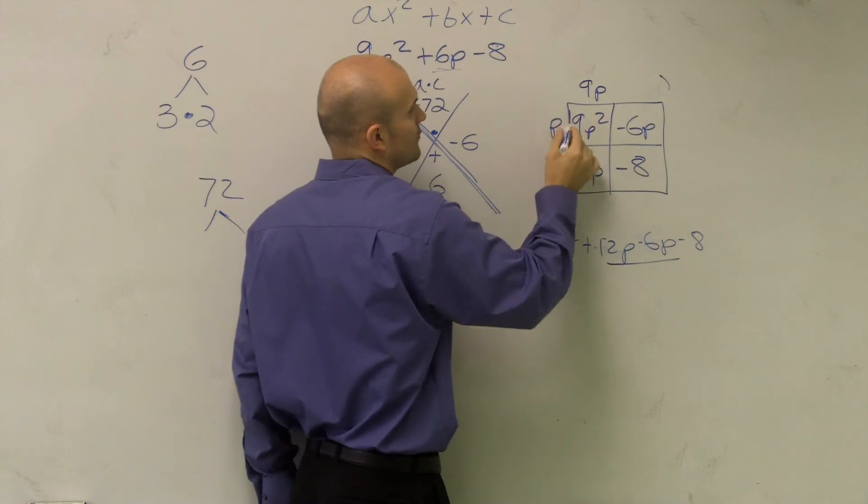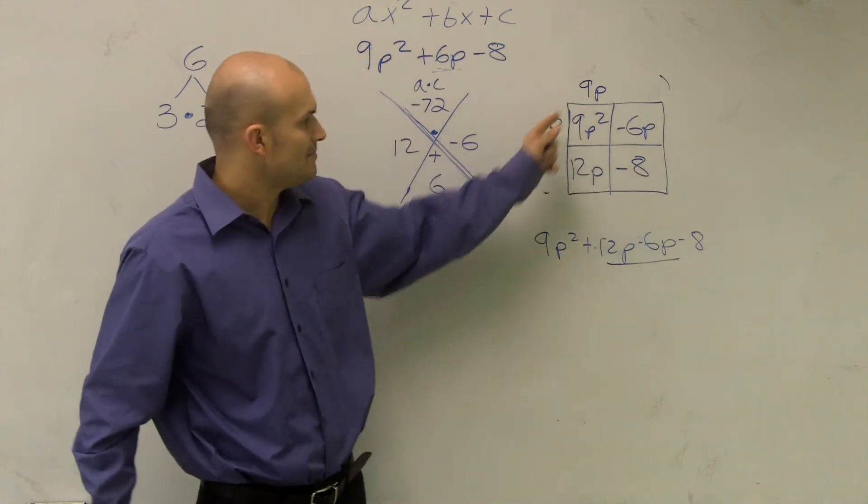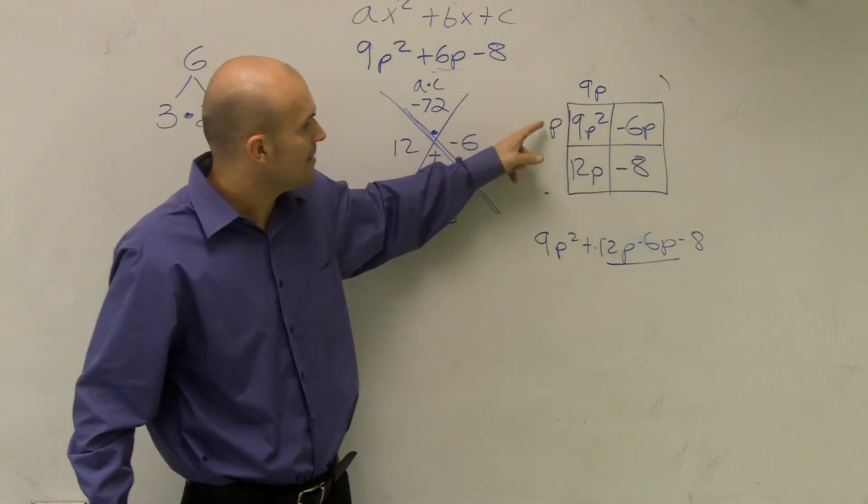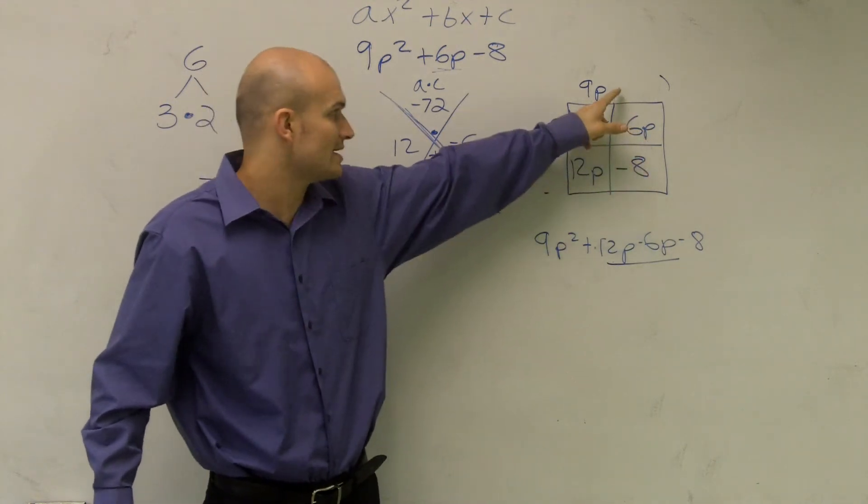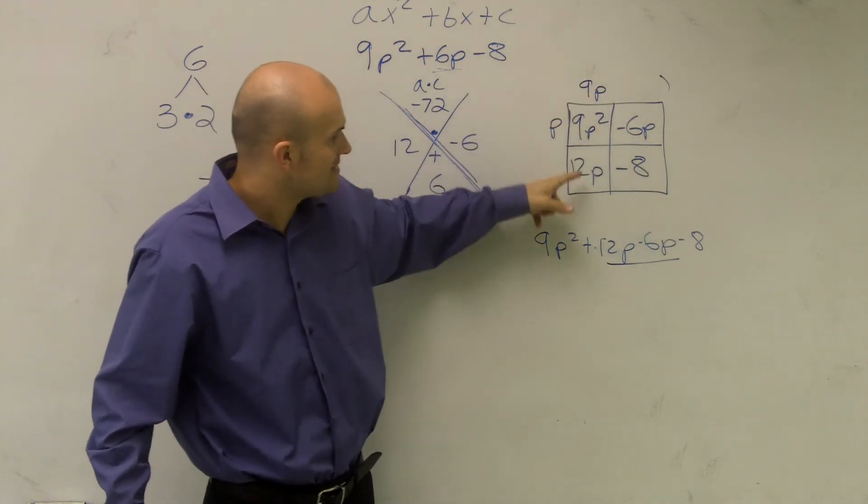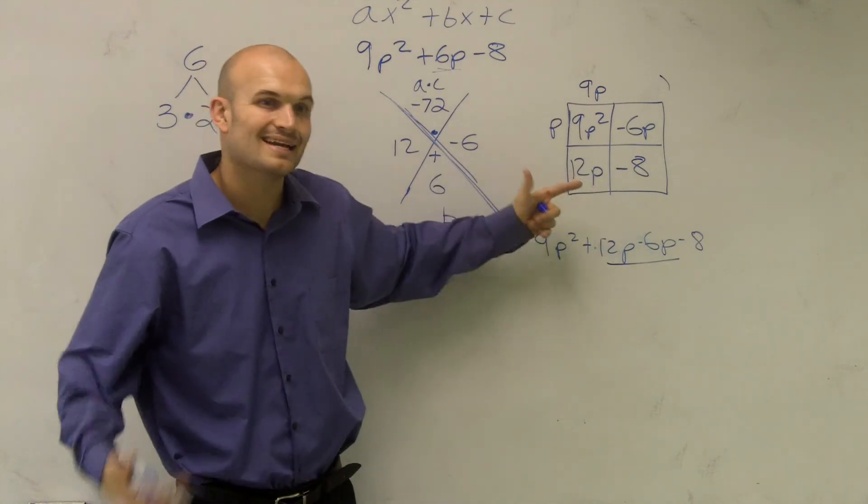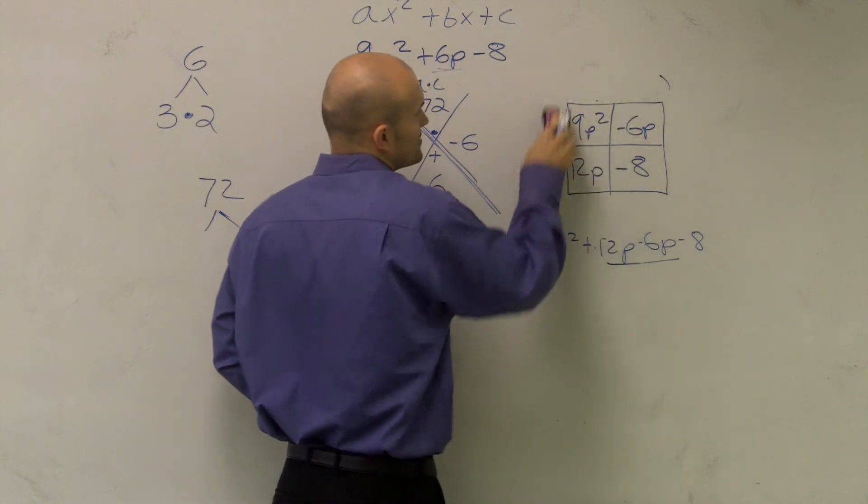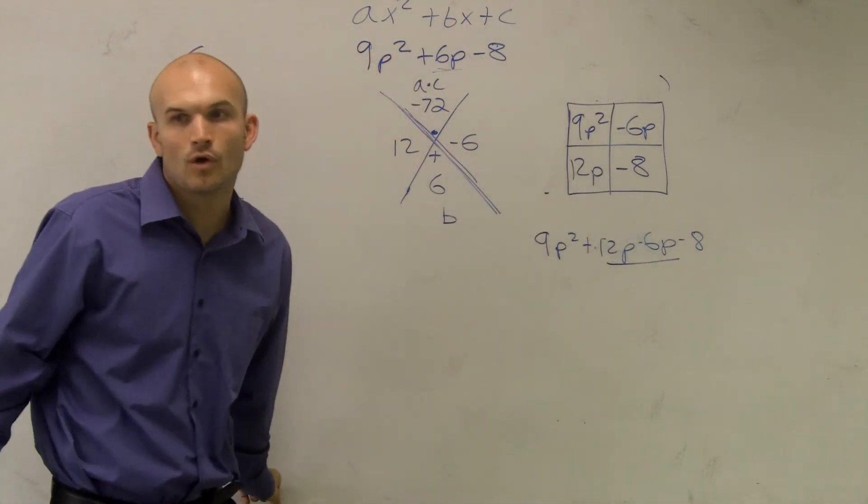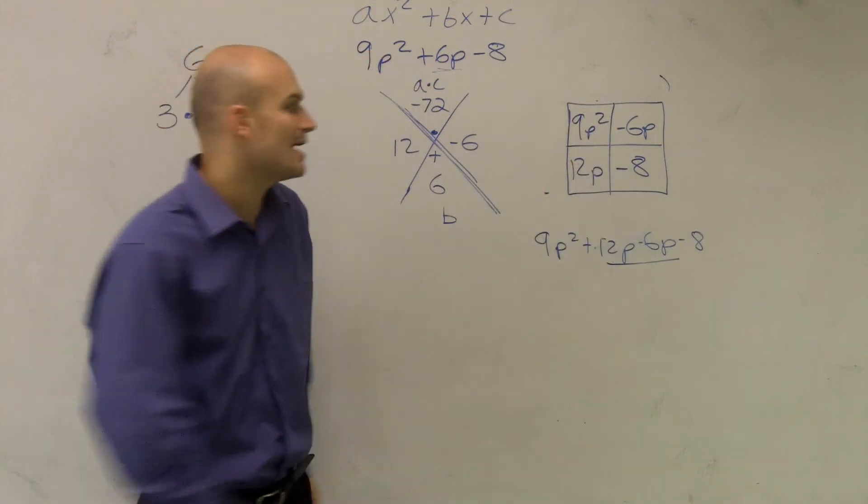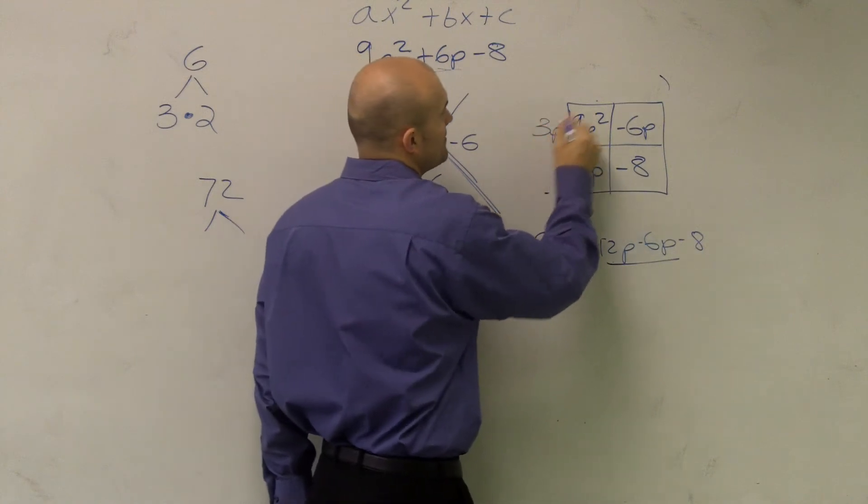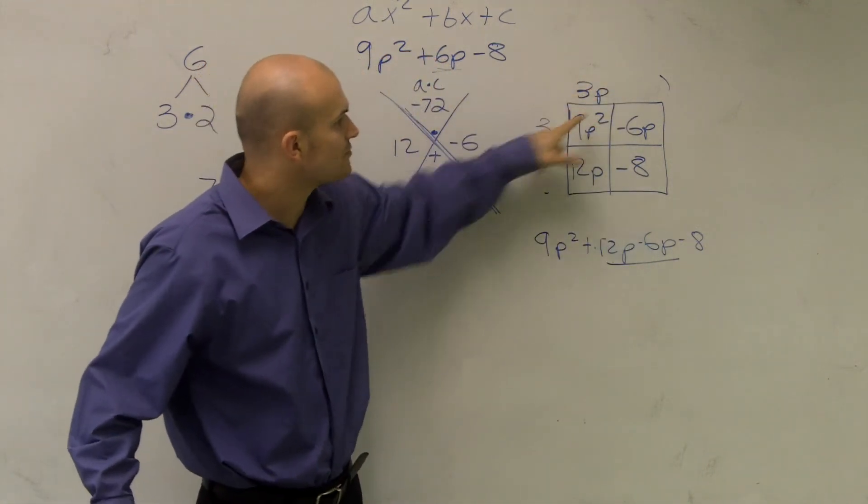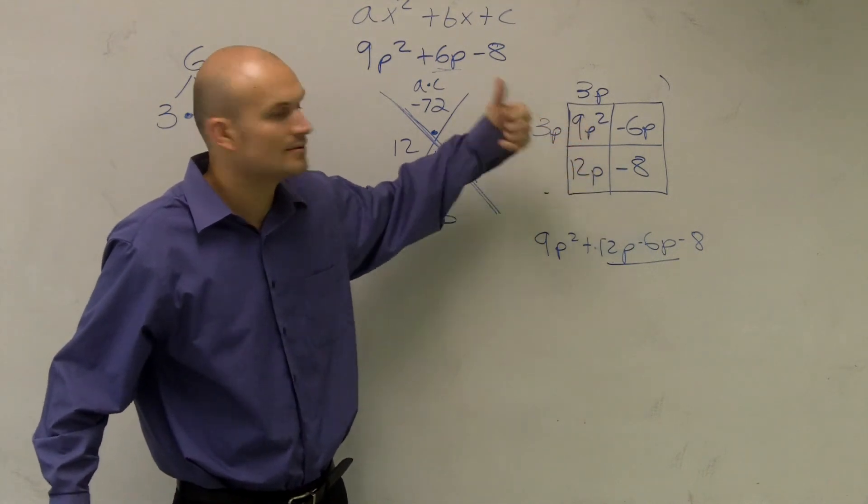How about over here? How about if I put a 9p over here and a p over here? 9p times p, again, still gives me 9p². But, alright, p times -6p, I could write a -6 up there. But 9p times what gives you 12p? Again, not an even integer. So what I'm going to have to do is we can't use 9 and 1 as my two numbers to multiply by 9. I'm now going to have to use 3p times 3p. So let's check it. Does 3p times 3p give you 9p²? Yes.